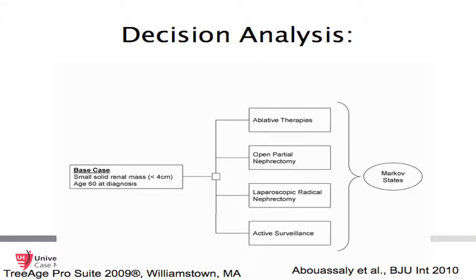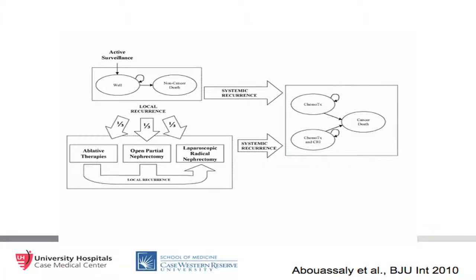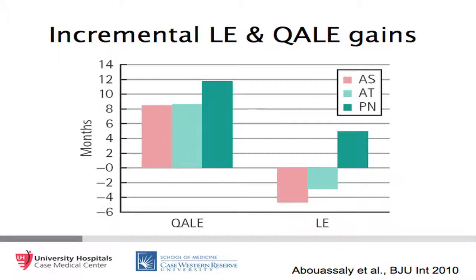To synthesize all of this, ideally we would take all the best published data and enter it into a large model such as a Markov state transition model, taking the patient through all possible treatment options. We can then model transitional probabilities such as probability of cancer recurrence, dying of kidney cancer, chronic renal insufficiency, and so on. This model can estimate the best treatment in terms of life expectancy as well as quality-adjusted life expectancy.